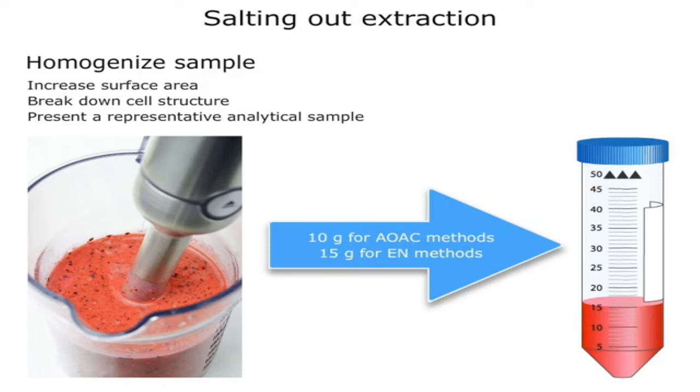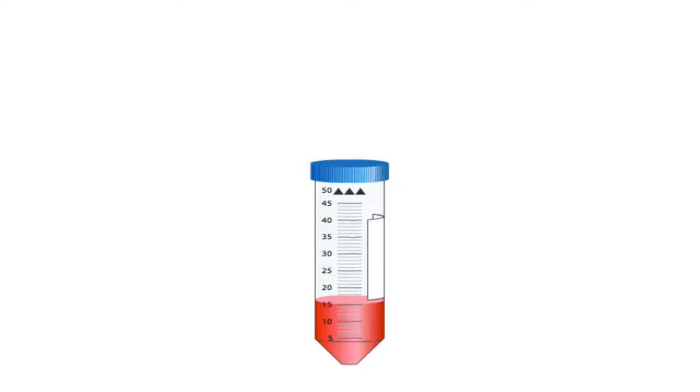Water is essential for partitioning to occur during the extraction procedure. Many fruits and vegetables contain between 80 and 95% water. For dry samples such as beans or grains, an appropriate portion of water should be added.